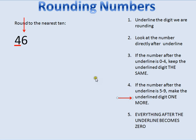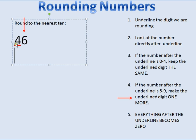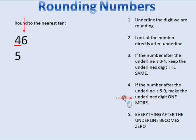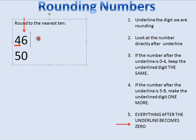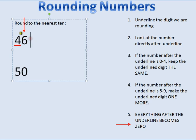If the number after the underline is five through nine, we make the underline digit one more. So I had four in the tens place. The ones digit is six, and six is greater than five, so I'm going to make this number five. Everything that comes after the underline becomes zero — so when I round forty-six to the nearest ten, I get fifty.